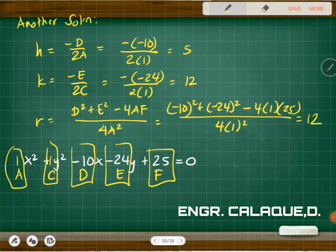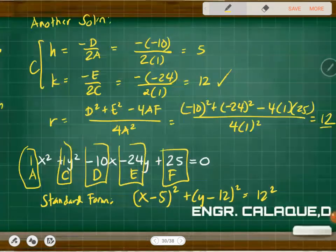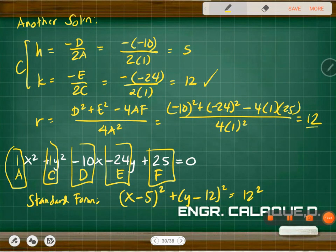Therefore the standard form is x minus h squared plus y minus k squared equals r squared. Since the center is at (5, 12) and not at the origin, we have x minus 5 squared plus y minus 12 squared equals 12 squared. You can choose whichever method you're more comfortable with. I think that's it — continue to the next video, thank you.